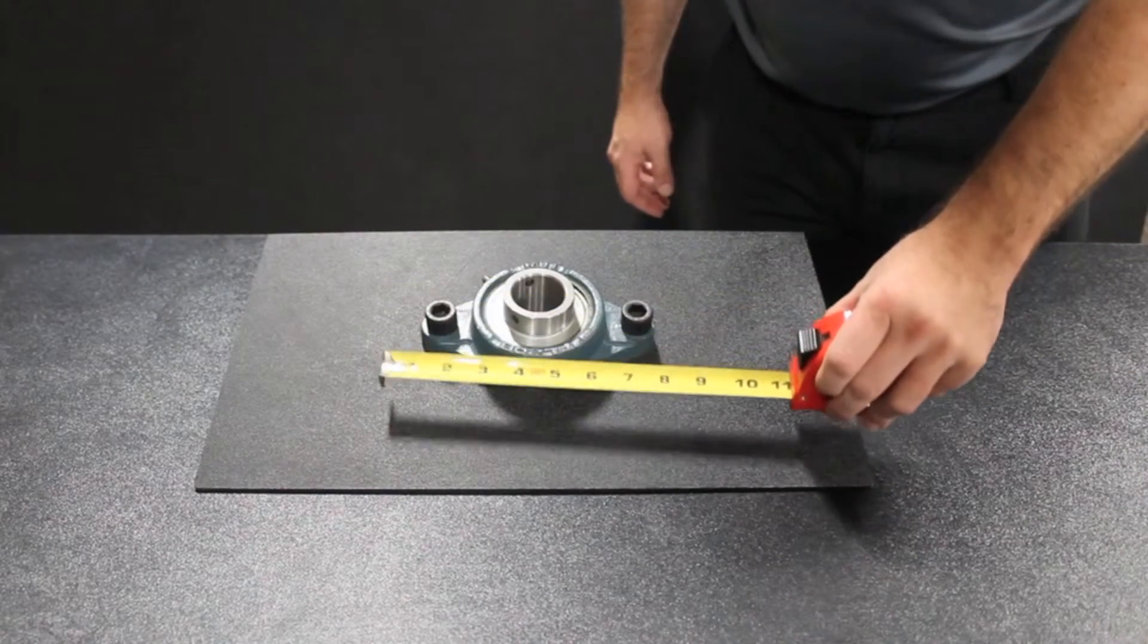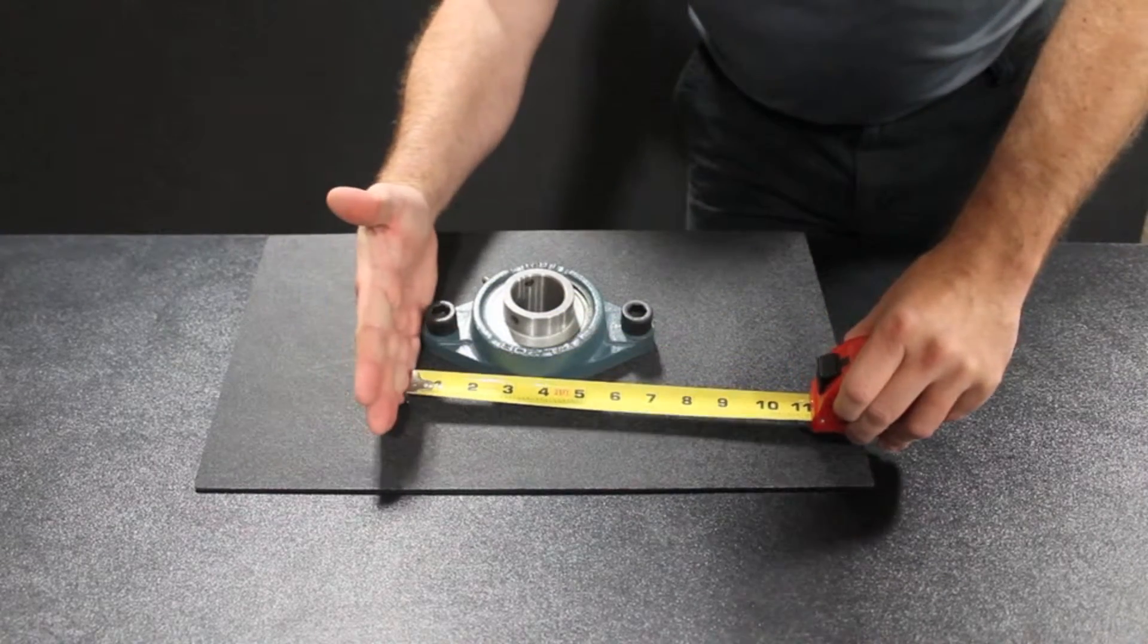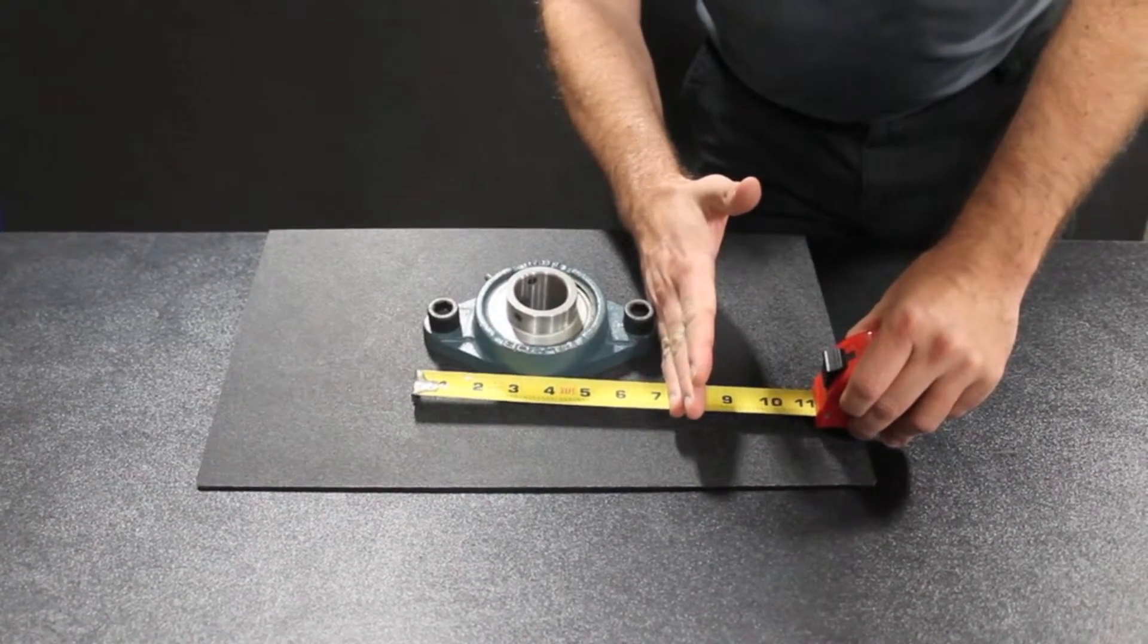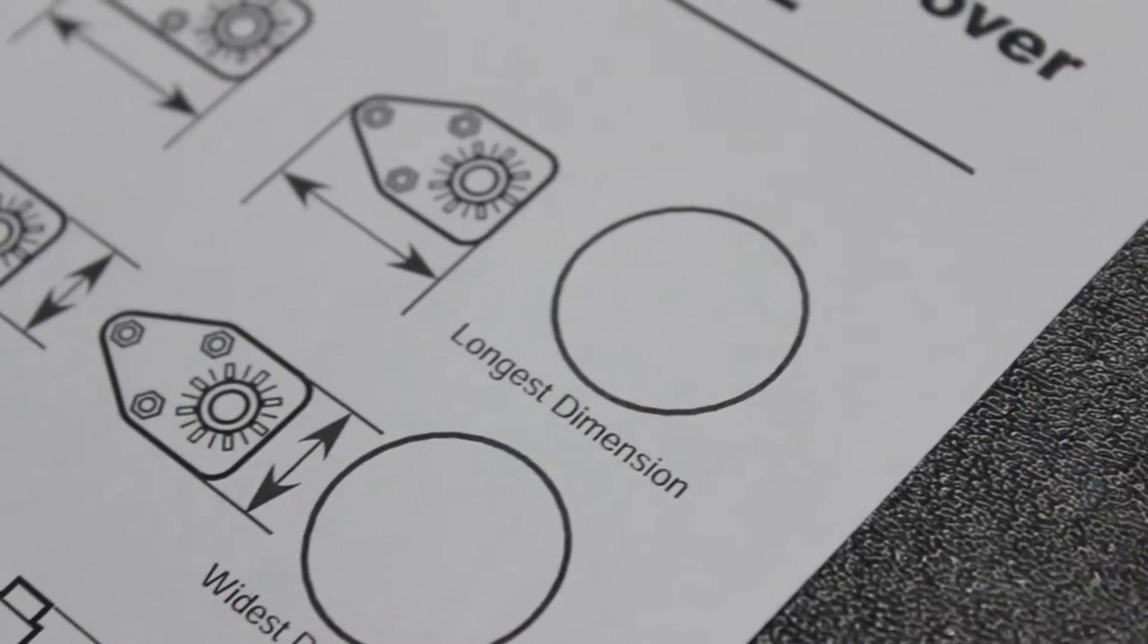Next, we need the size of your part. The first measurement required is the length of the bearing. This is found when looking at the bearing from the top down measuring the distance from the two longest points.